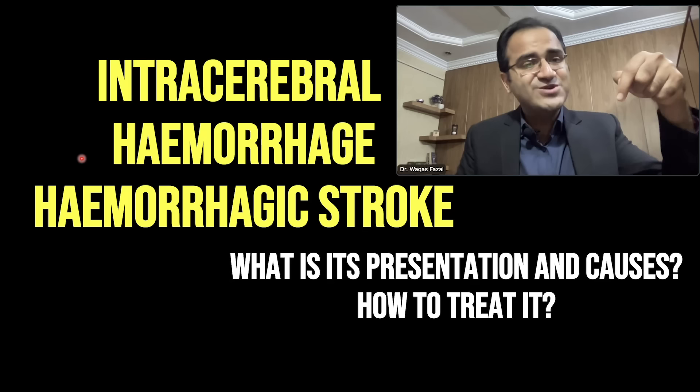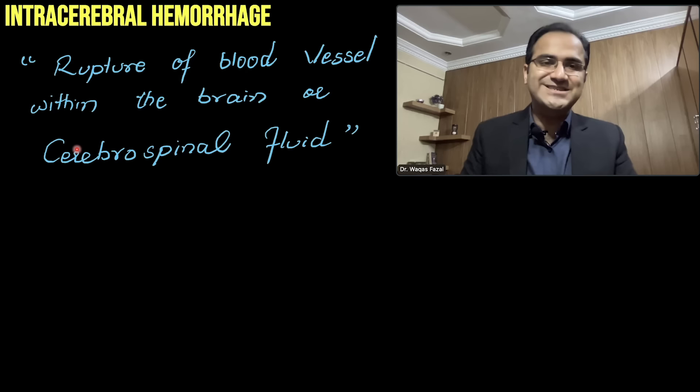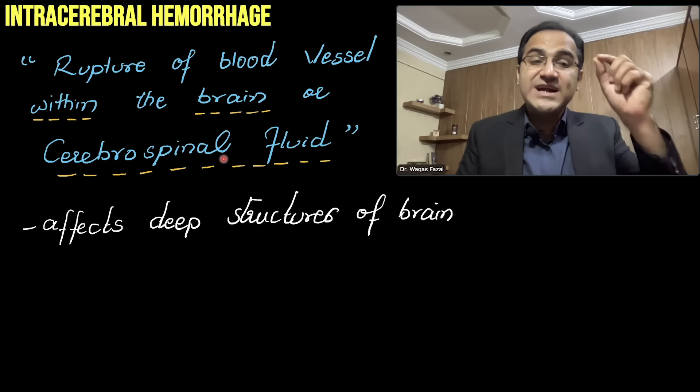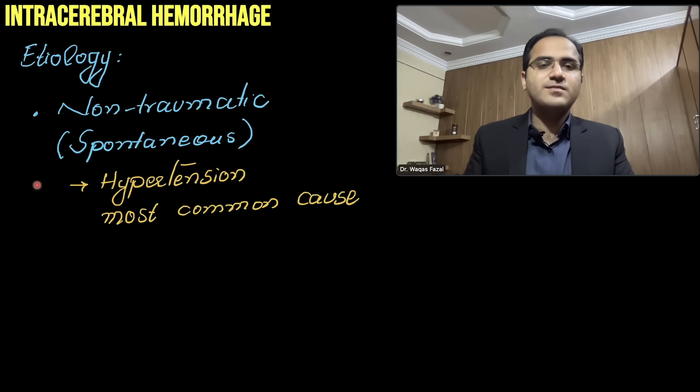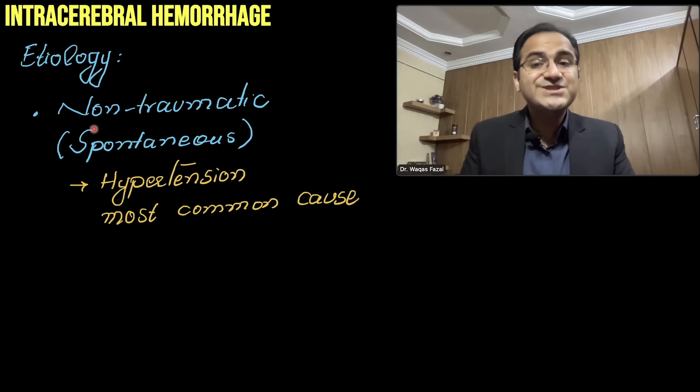Intracerebral hemorrhage is defined as a rupture of a blood vessel within the brain or within the cerebrospinal fluid. That rupture commonly affects the deep structures of the brain — deep structures like the basal ganglia, thalamus, and putamen.